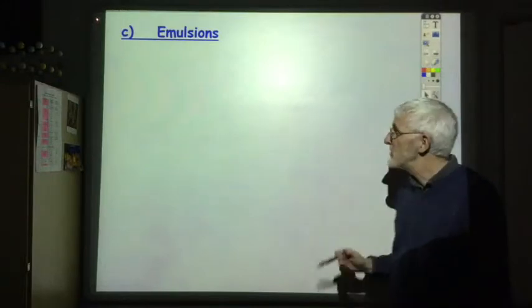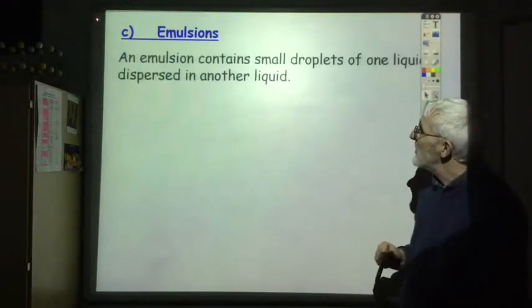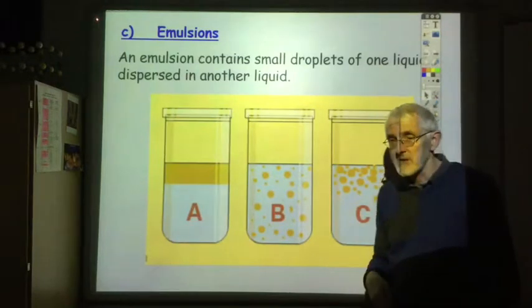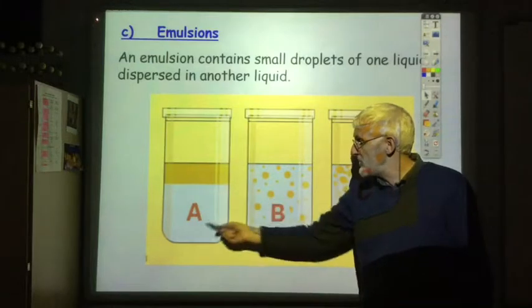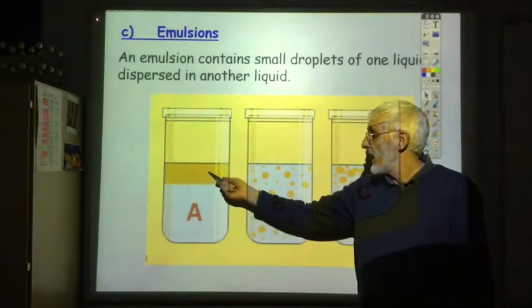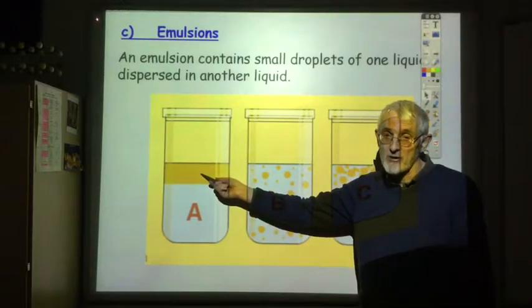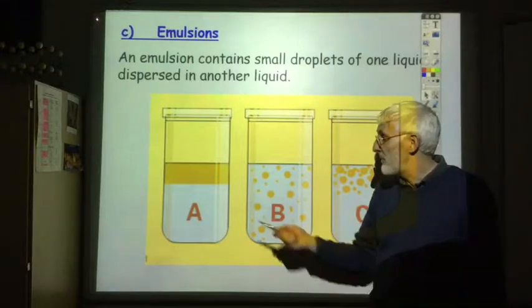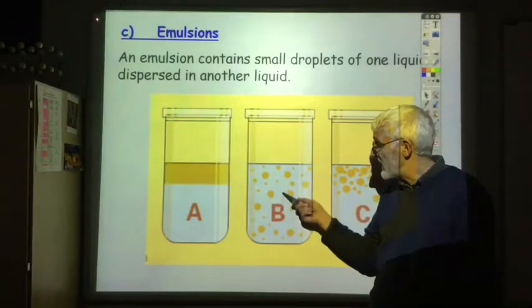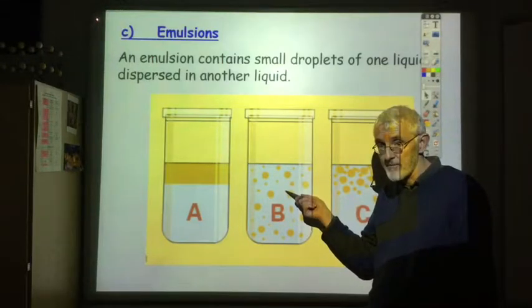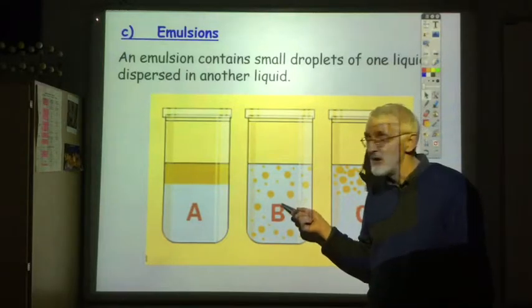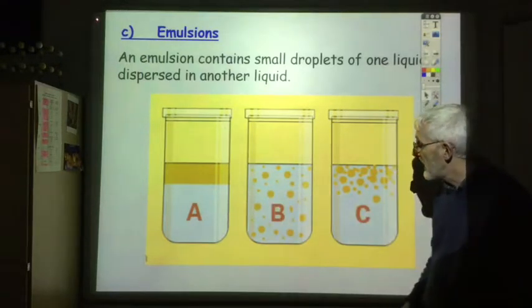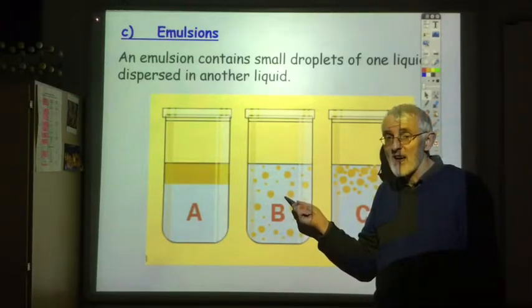Now we're going to look at the related topic of emulsions. An emulsion contains small droplets of one liquid dispersed within another liquid. Imagine the blue region is water or an aqueous solvent, and the top layer is an oil or non-polar solvent — they don't mix, so they form two separate layers. If you give it a good shake, the oil will be dispersed throughout the aqueous solvent — this is an emulsion. However, if we leave it to settle, the oil will gradually recombine at the top. So in order to keep it as an emulsion, we have to add something called an emulsifier.